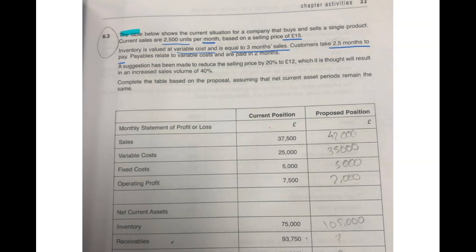Payables relate to variable costs and are paid in two months. A suggestion has been made to reduce the selling price by 20% - so from £15 you reduce it by 20%, which is actually £12. So far so good. Our selling price is £12.